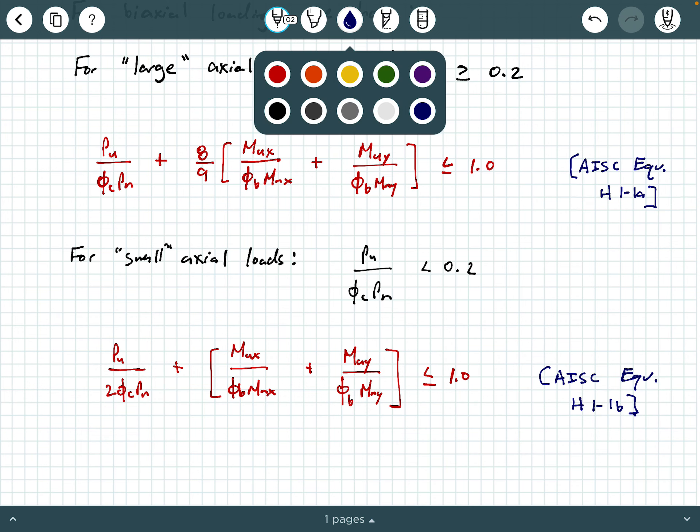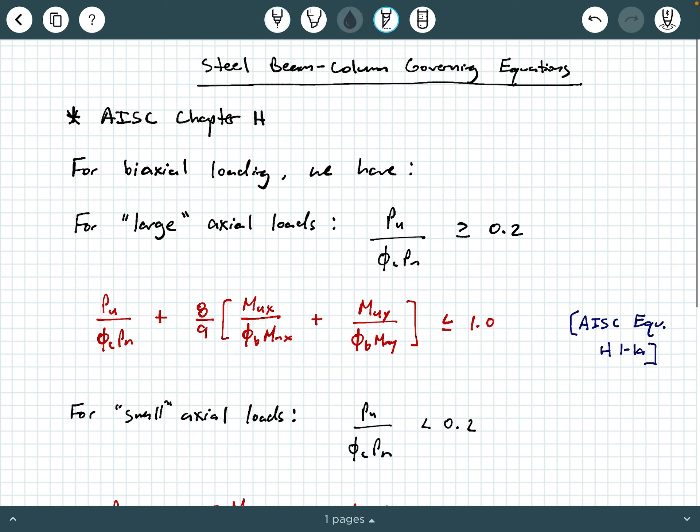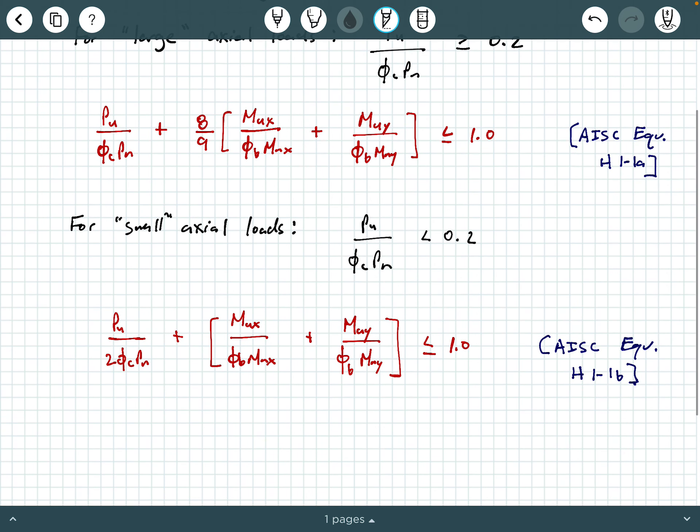Now, the other thing I want to make a point of in this video is at the very beginning of the video, we said for biaxial loading. Don't worry, I haven't forgotten that I threw that word out there. What does biaxial loading mean? Well, what that means is you have an axial load effect given by the PU that's applied to your member. And then you also have two moment effects. You have a moment about a cross-sectional x-axis and another moment MUY about a cross-sectional y-axis.